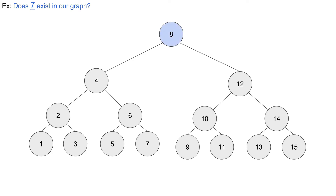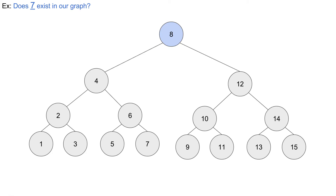We always start at the root node, which is our 8. We're going to go left as soon as we can, and if we can't go left any farther we're going to backtrack and then try to go right. So always go left as far as we can, then if we can't go left we go right, and if we can't go right we backtrack. Starting at the 8, we go left, which takes us to this 4.